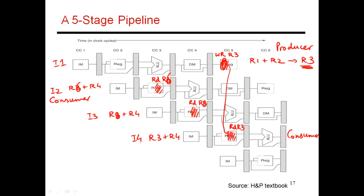So what this means is, because of this data dependence — because there's a producer and a consumer, and because of when the write and read happen into and from the register file — I have to introduce a two-cycle gap between the producer and consumer. I have to do two other instructions before I can proceed with the consumer. One option is to put the onus on the compiler and say that my hardware is completely brain dead: it's just going to take the next instruction and send it through the pipeline. It is up to the compiler to make sure instructions are produced in the right order, so that if there is a producer and a consumer, there's always going to be a two-instruction gap between those two. So the compiler has to analyze the code, identify all these examples of producers and consumers, and make sure there is a two-cycle or two-instruction gap.